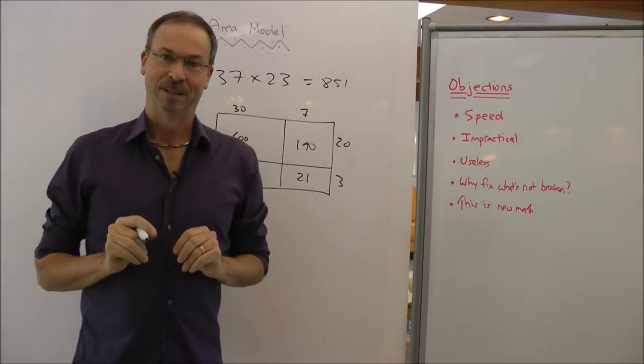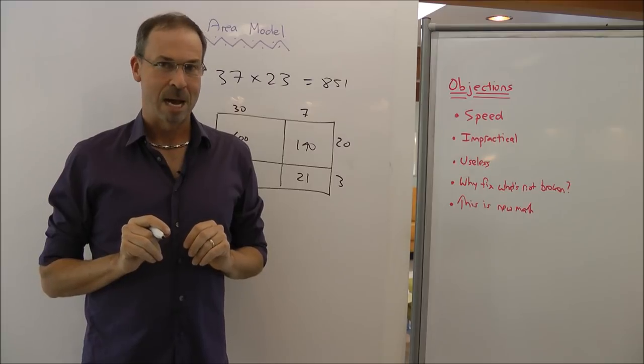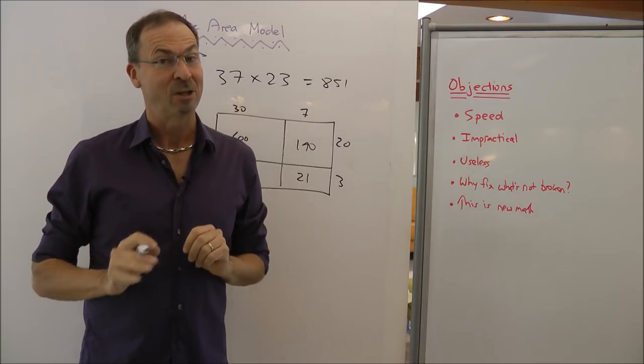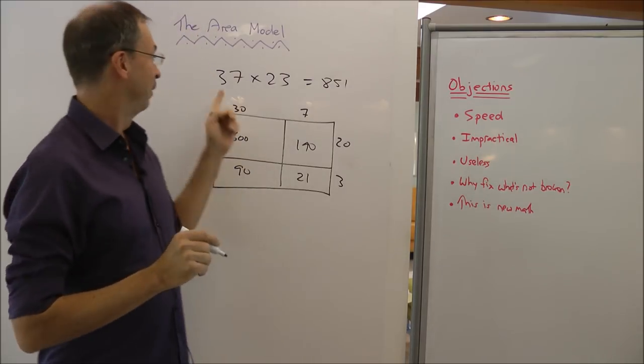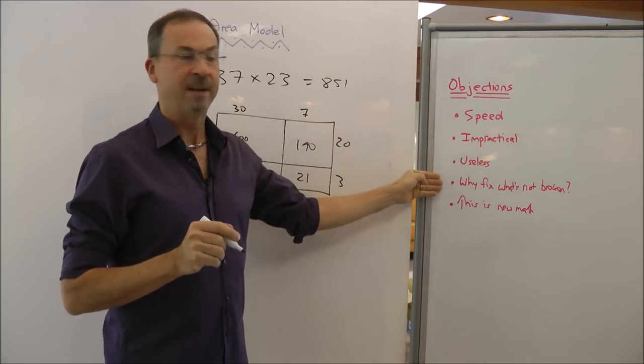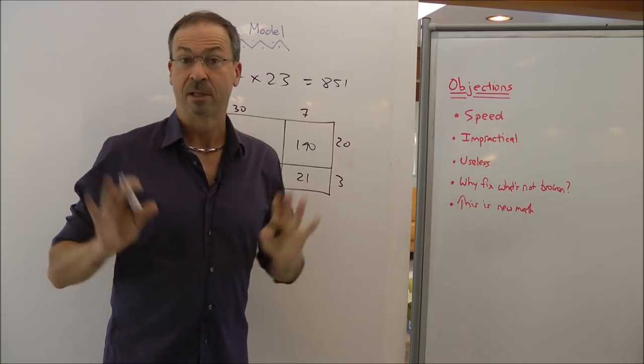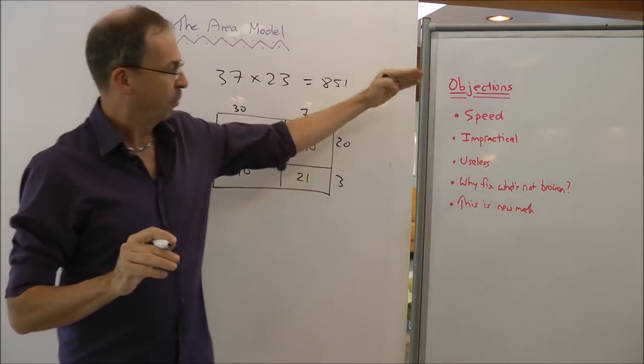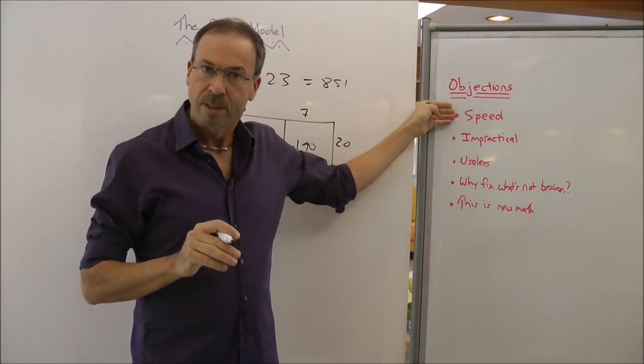All right, so what are the objections? Well, I said earlier on that they're my objections, but they're actually not. These are the objections I'm seeing on the comments when people are looking at videos on the area model. That the issue is of speed, this is impractical, this is useless, why fix something that's not broken, and this is just new math. So let me go through each of these.